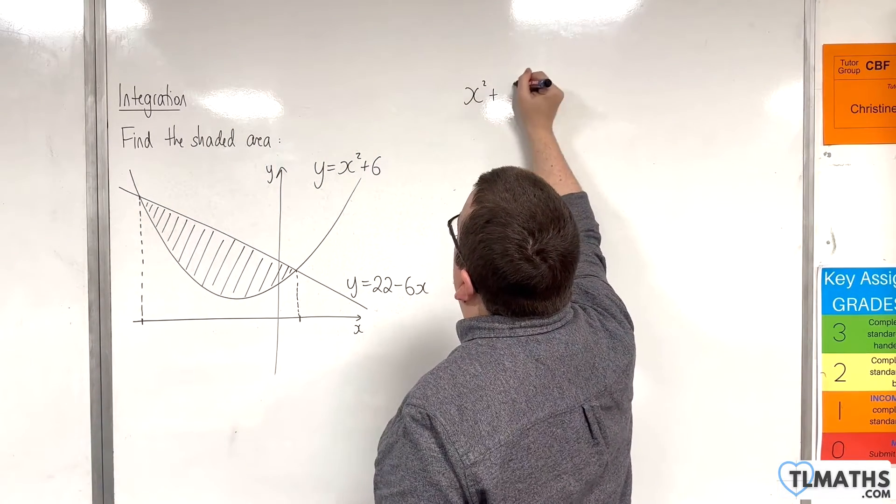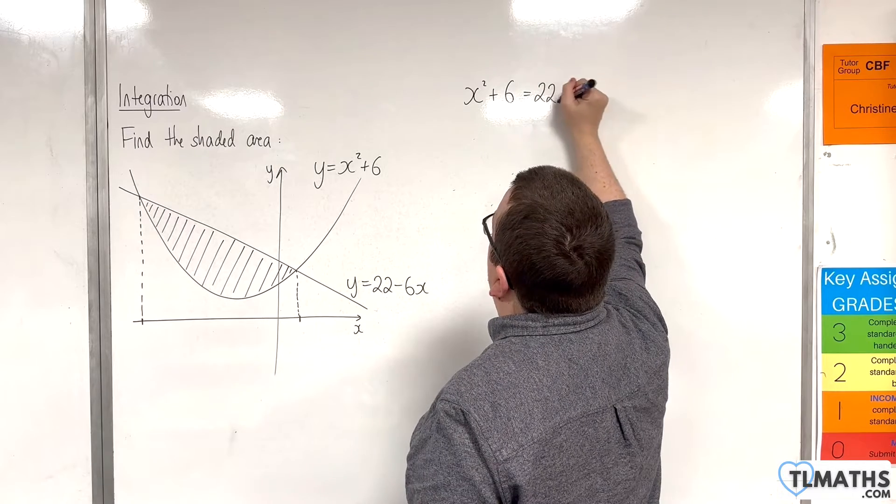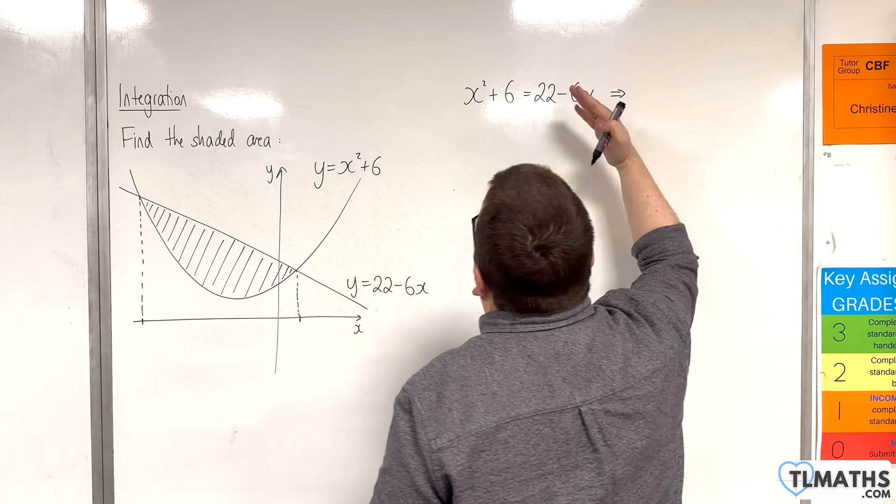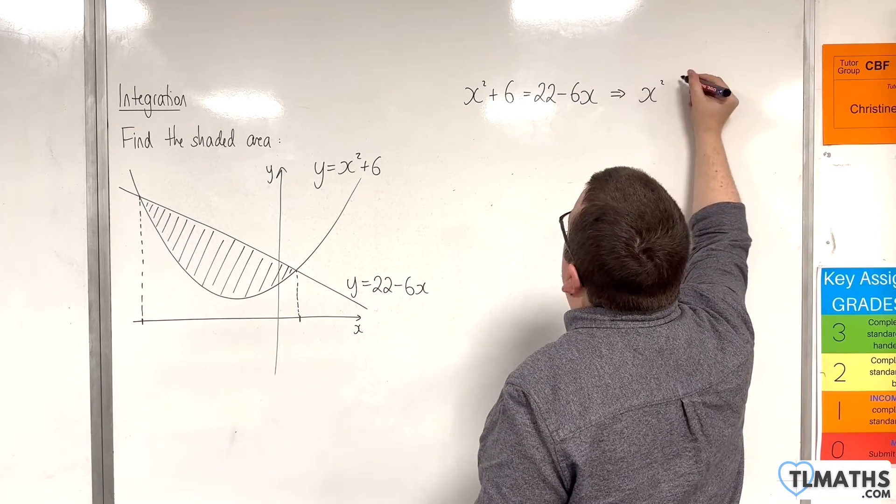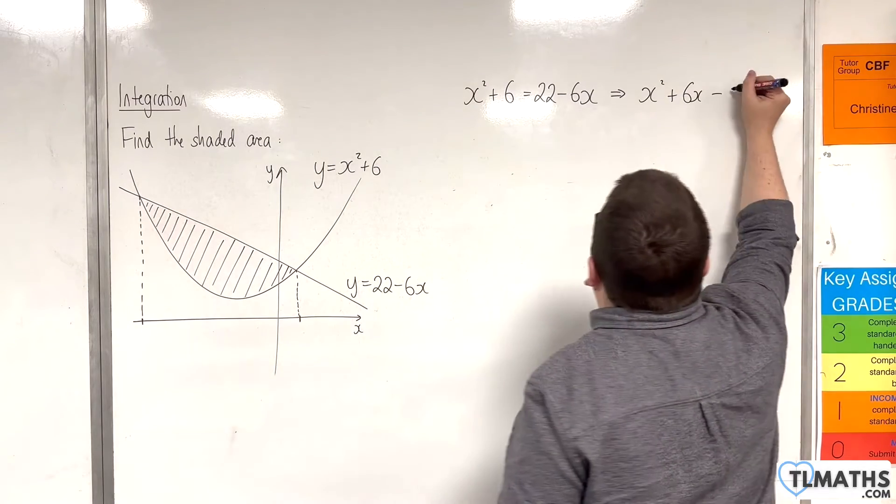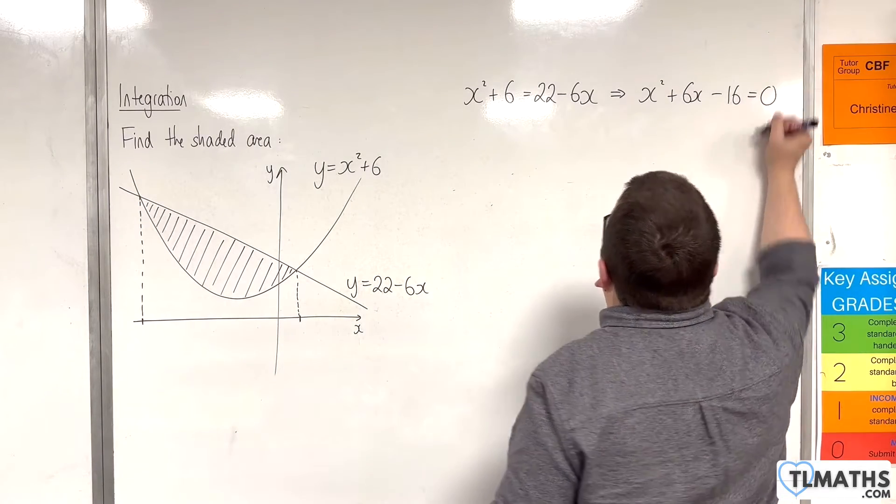So, x squared plus 6 is equal to 22 take away 6x. Now, I'm going to move everything onto the left-hand side and we're going to get x squared plus 6x and then take away 16 is going to be equal to 0.